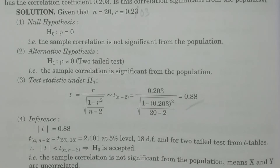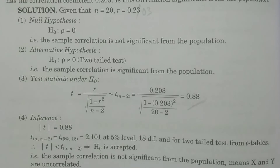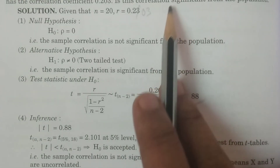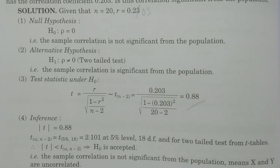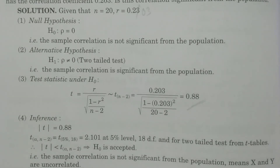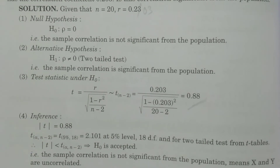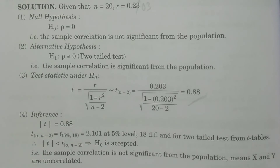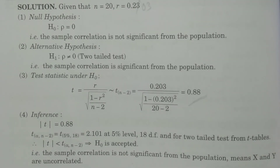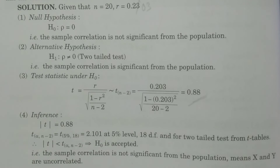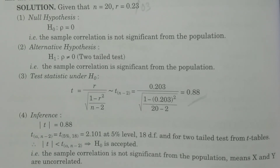The conclusion is that the sample correlation is not significant from the population, that is, x and y are uncorrelated. In this problem, income and expenditure are uncorrelated — there is no correlation from this sample. This is what the conclusion we can draw from the t-test for correlation coefficient, that is the small sample test. This is the way you have to do the correlation coefficient problems. Thank you.